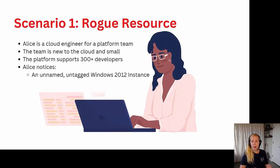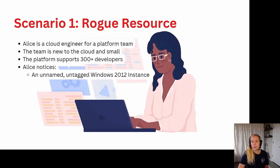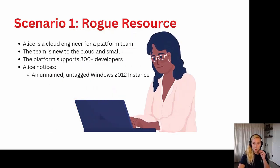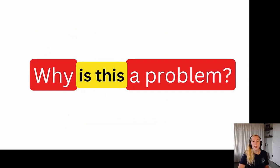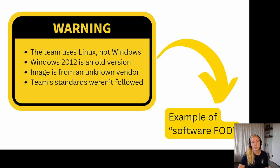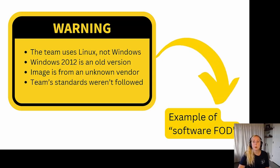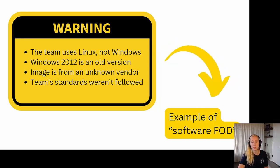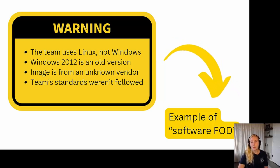In our first scenario, Alice is a cloud engineer for a platform engineering team. The team is new to the cloud and is pretty small — less than 10 people — however, the team is building a platform that needs to support over 300 developers. Alice comes to work one day and notices an odd resource in the team's environment: an unnamed, untagged Windows 2012 EC2 instance. Alice knows the team is a Linux shop and shouldn't be running Windows systems. Windows 2012 is also an old version, the image came from an unknown vendor in the AWS marketplace, and whoever created it didn't follow the team's naming and tagging conventions — so she can't tell who or why the resource was created. To Alice, this seems to be a classic case of software FOD.